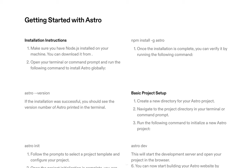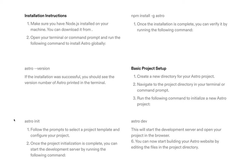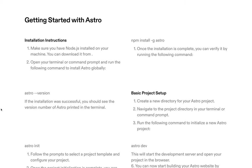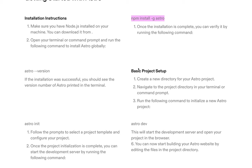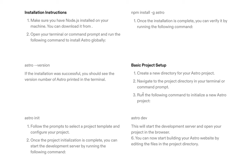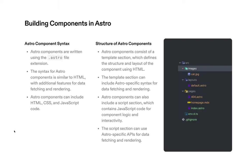Installation instructions — getting started with Astro. Open up your terminal and type in the Astro version command. If you don't have Astro, go to their main website or run npm install Astro. The basic setup is to create a new directory for your Astro project and then run the dev server to get started. I'll cover that in more detail in the next video, where I'll showcase my own project.